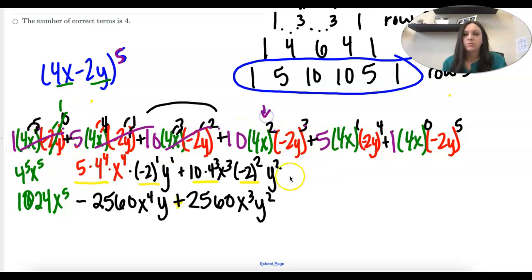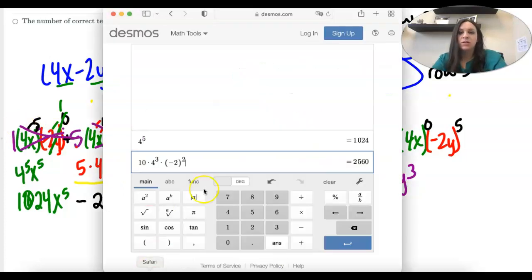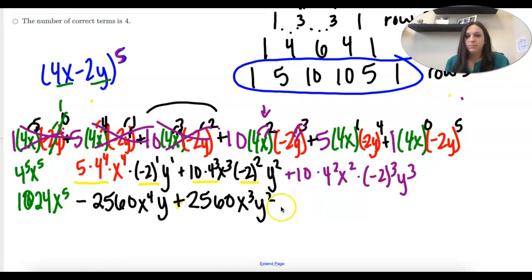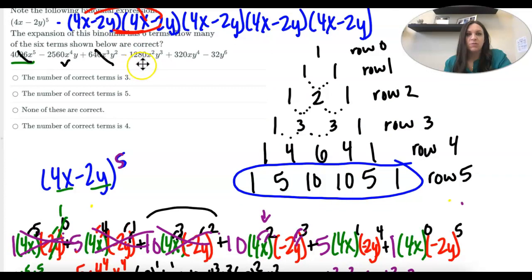Now we're on the fourth term. We have 10 times 4 squared, x squared, times negative 2 to the 3rd power, y to the 3rd power. Putting all the numbers together, we get negative 1,280, x squared, y cubed. That one is correct.